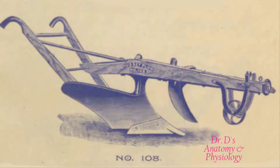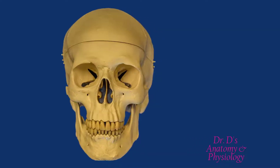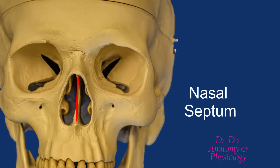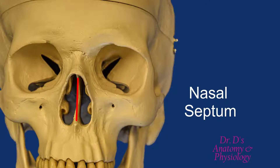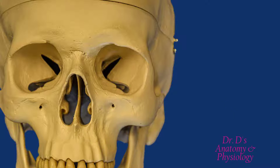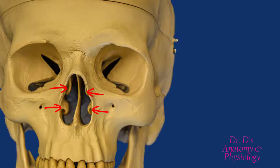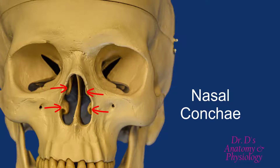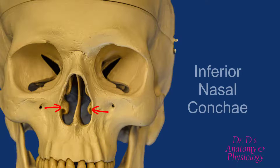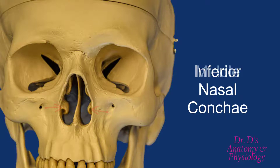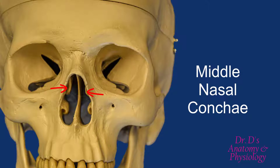So the nasal septum is composed of the perpendicular plate of the ethmoid bone and the vomer. Now let's consider what we find on the lateral walls of the nasal cavity. Projecting from the lateral walls we see curving bones referred to as the nasal conchae. We can divide them into the inferior nasal conchae and the middle nasal conchae — those are the two pairs visible from this view. Additionally, there are superior nasal conchae which we can't see from this perspective.